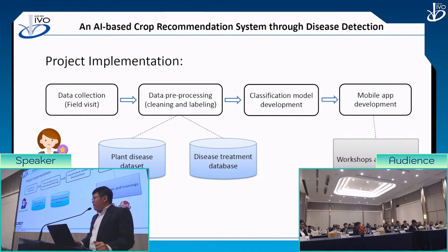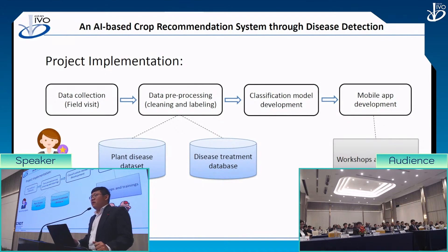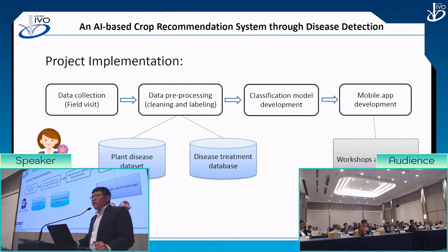There was also a question about image color quality — how do you differentiate diseases that may look similar? The presenter acknowledges this as a challenge: when image quality differs, the results differ too. They will try to minimize this by using data augmentation to provide more training data so the model can learn better on low-quality images, accounting for varying mobile phone quality among farmers. When images meet acceptable quality, the model can process them well.